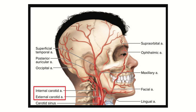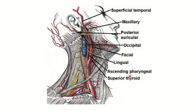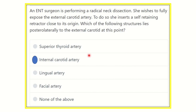This internal carotid artery lies posteriorly and laterally. In this picture also, we can see the external carotid artery originating from the common carotid artery. This is the internal carotid artery, and there is no other important structure close to the external carotid artery at this point. So our answer is the internal carotid artery, which originates from the common carotid artery and lies posterolaterally relative to the external carotid artery.